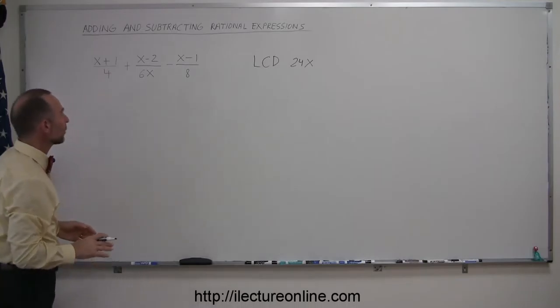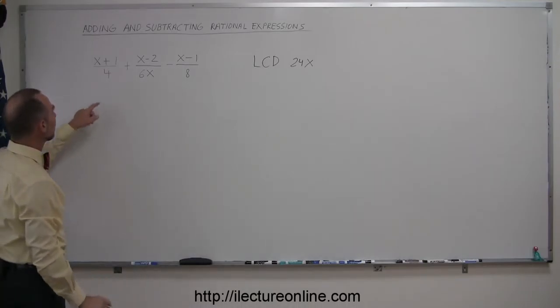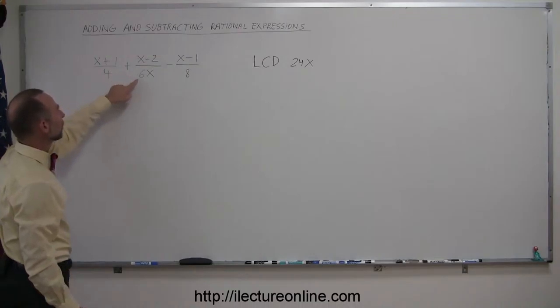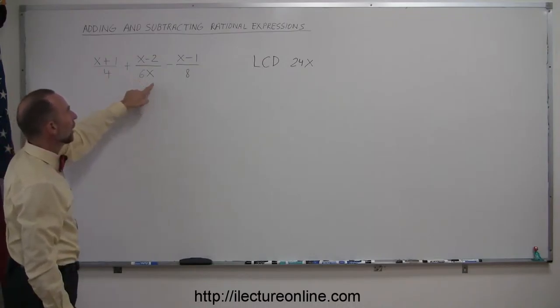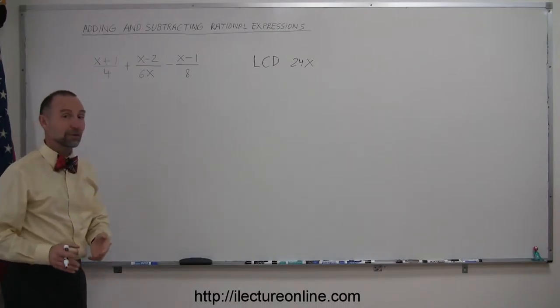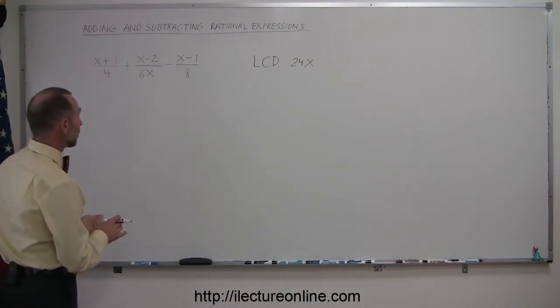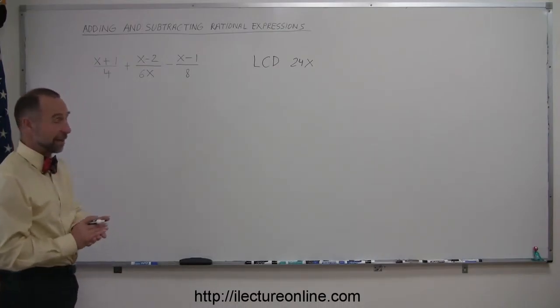So now we have to make every denominator equal to 24x. That means we have to multiply this one by 6x, multiply this one by 4, and multiply this one by 3x. Of course, whenever you multiply the denominator by something, you must multiply the numerator by the exact same thing.